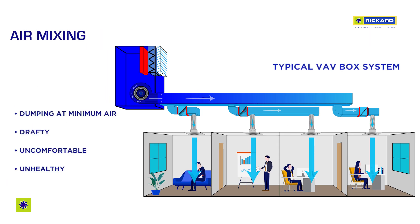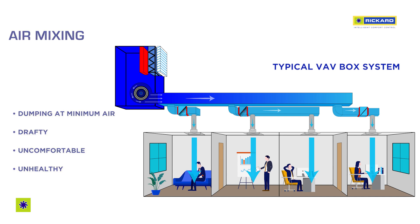When the air conditioning load is low, VAV boxes close to minimum to match the requirement. Because the outlet downstream of the box does not change its geometry to match the reduced volume, the velocity of the outlet is also reduced, resulting in dumping below the diffuser. The occupant therefore experiences drafty, uncomfortable, unhealthy conditions.